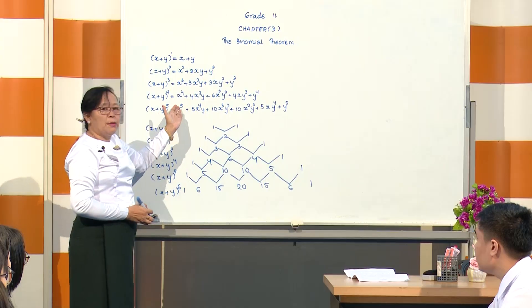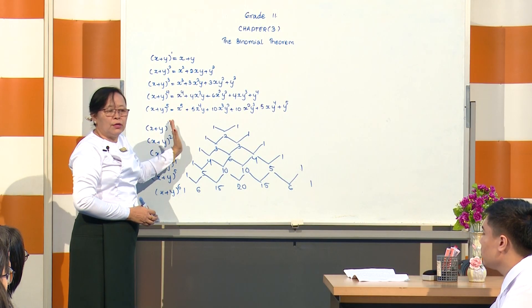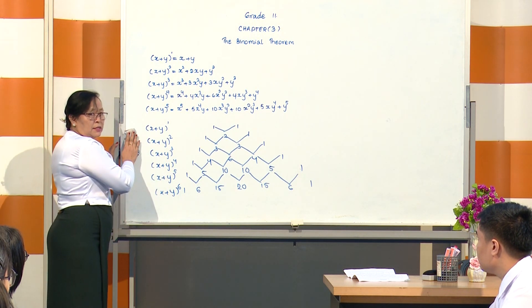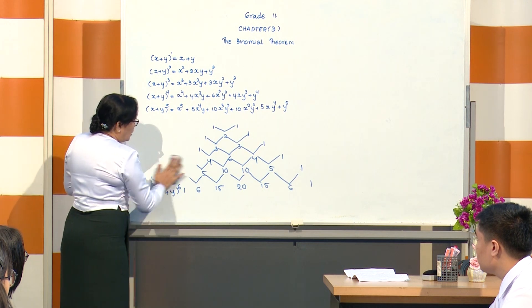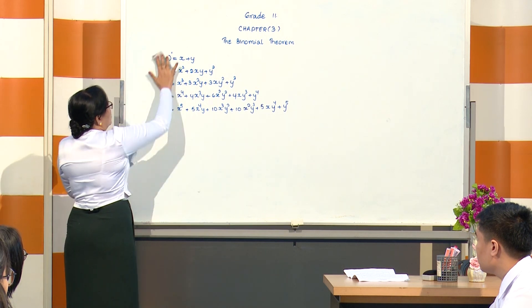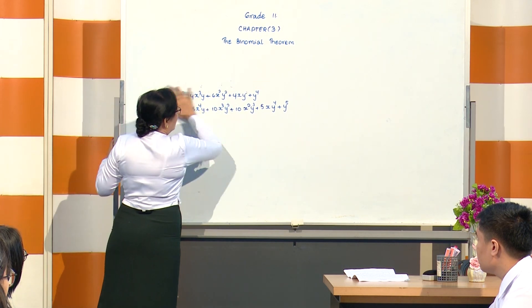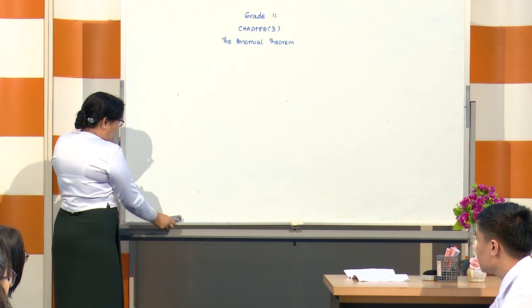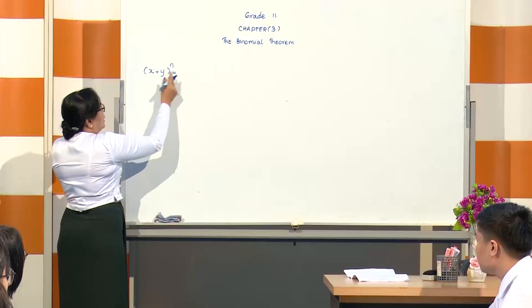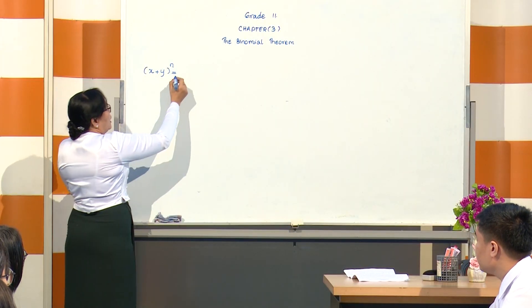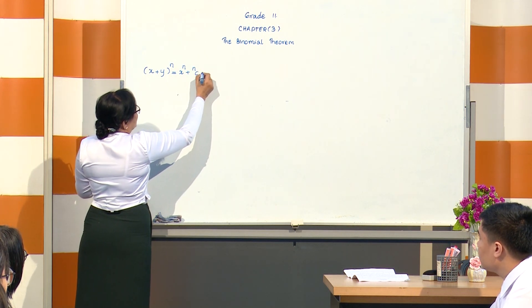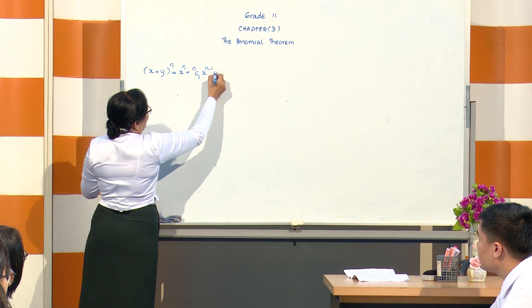Now you can see how the pattern works. This pattern is called Pascal's Triangle. The expansion of (x+y) to the power n gives: x to the power n, plus nC1 times x to the power n minus 1 times y to the power 1.